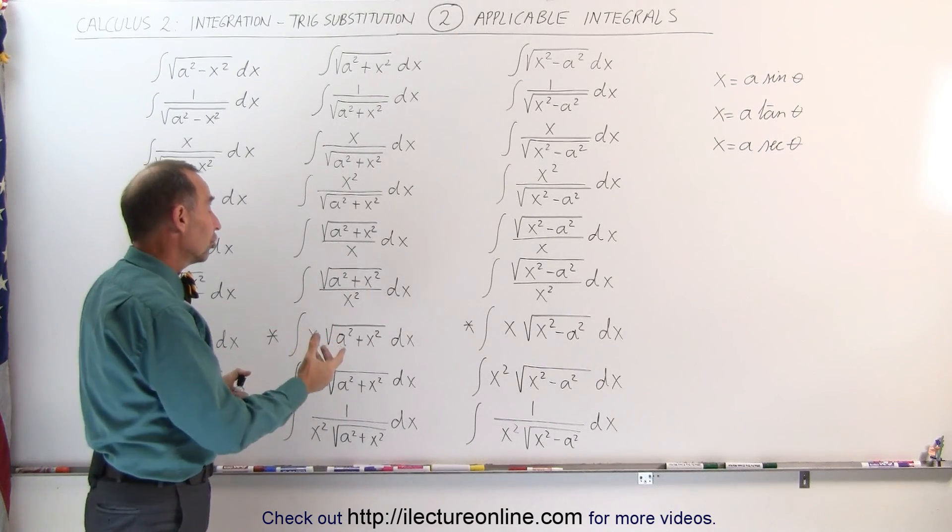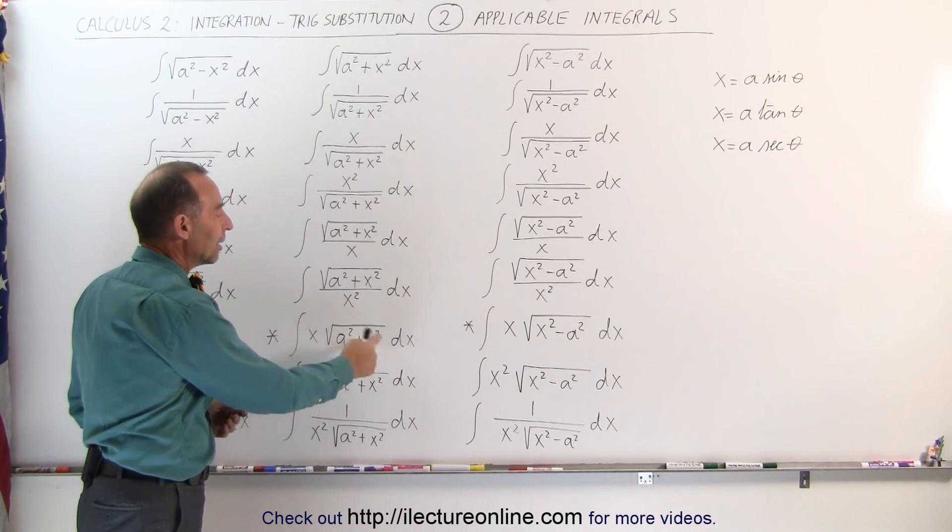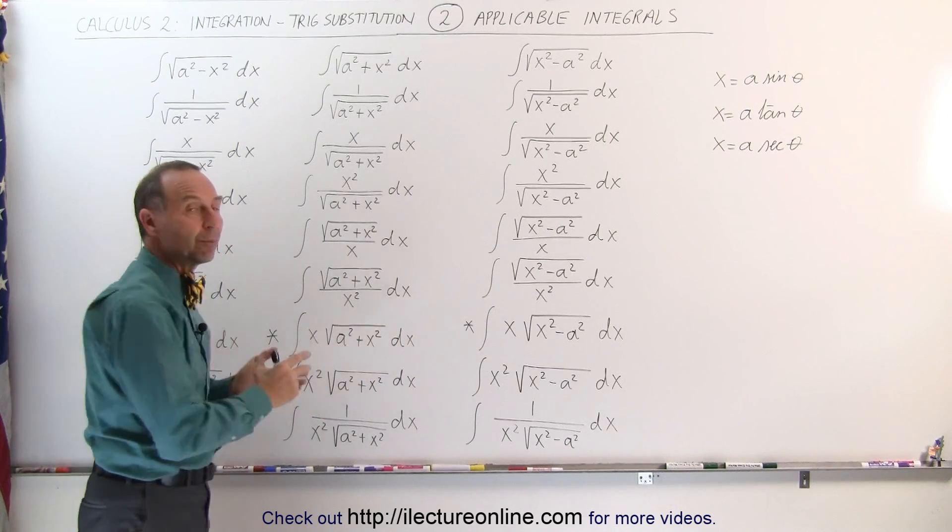In other words, you can do a substitution. You let what's inside the radical equal u, and then you can find 2x times the x would be the proper differential,